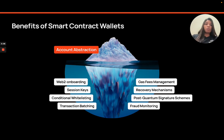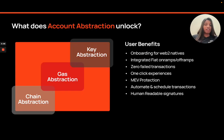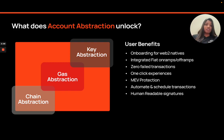Through Biconomy SDK, you can have social logins enabled on your dApp to make the onboarding experience of users just like any Web2 app. You can have fiat on-ramp and off-ramp within the dApp. We can also allow users to have gasless transactions by sponsoring the gas fees for them.